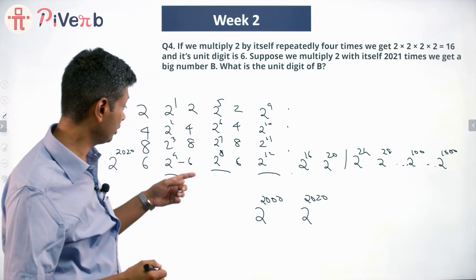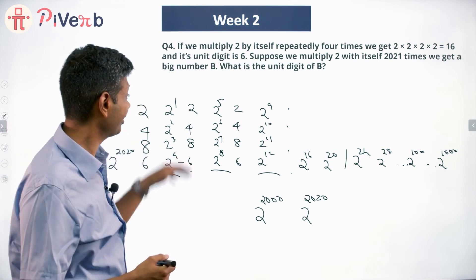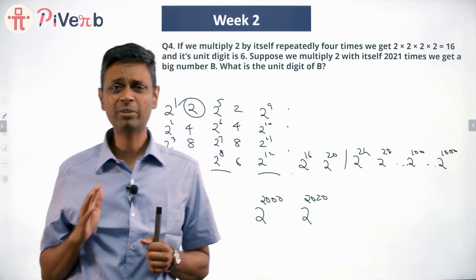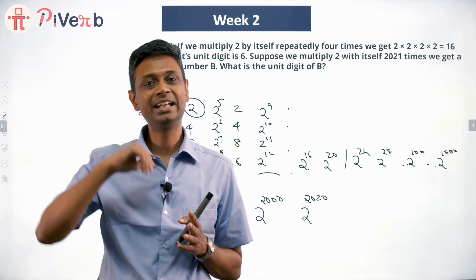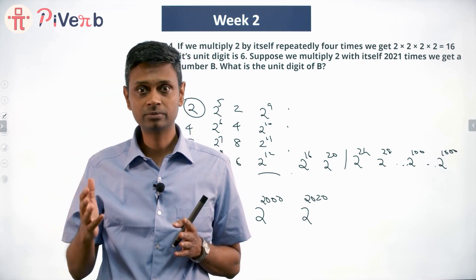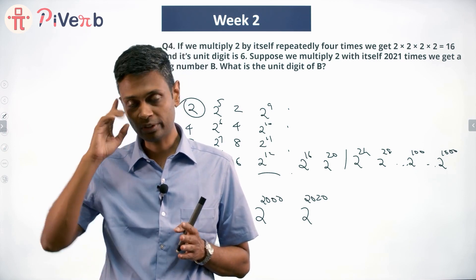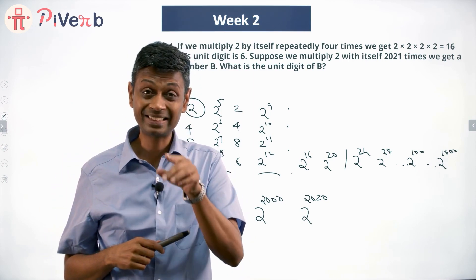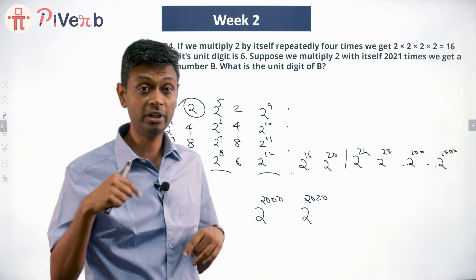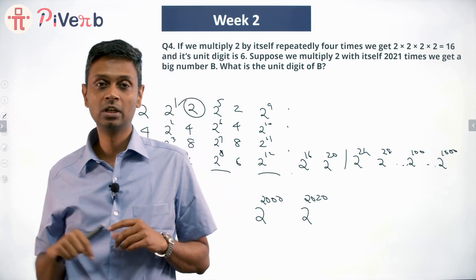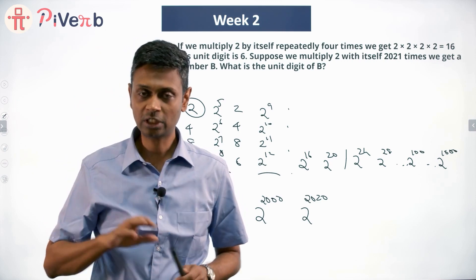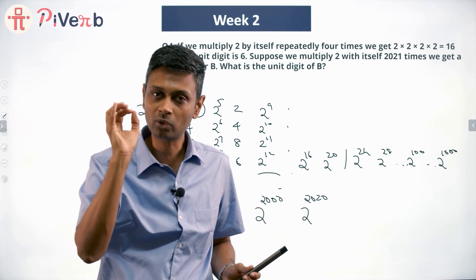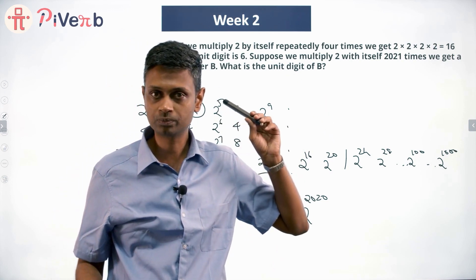2^2020 ends in 6, and 2^2021 is the next step in the cycle, so it ends in 2. The units digit of 2^2021 is 2. Remember: for any power question — any number to any power — when tracking the units digit, always find the pattern first, then figure out where your exponent sits in that pattern. This one goes in steps of 4 (2, 4, 8, 6). Locate the closest multiple of 4, then count forward. You're good to go.